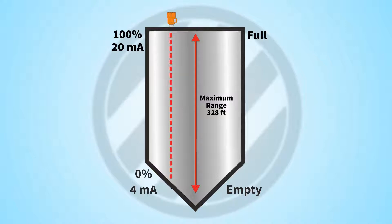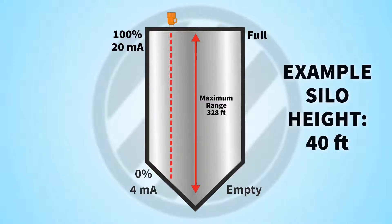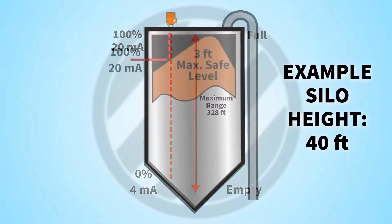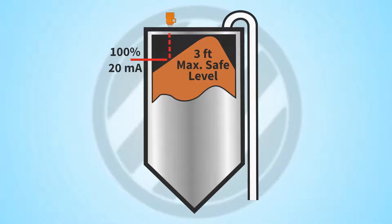Firstly, we must tell the radar the tank height and where the bottom of the measuring range is. In this example we will use an average silo measuring 40 feet in depth, so we will set the low 4 milliamp point at 40 feet. We then need to consider where we will program the 20 milliamp full condition, thinking about the fill point position relative to the probe and the product profile that forms underneath during fill. Setting the 20 milliamp span at 100% ensures a good average of cone height and the vessel is not put at risk of overfilling. In this example, the 100% scale is set at 3 feet from the radar face, giving an output range of 37 feet from the bottom of the silo to its highest safe fill point.